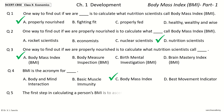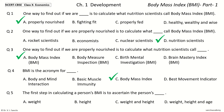Question 5: The first step in calculating a person's BMI is to ascertain the person's dash. The options are: Weight, Height, Weight and Height, Weight Height and Age. And the answer is weight and height.